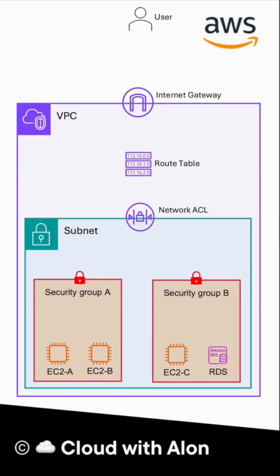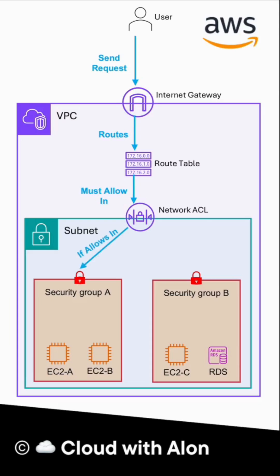Now let's see how NACL and security group work together in a real-world application. When a user sends a request, it first reaches the internet gateway, then goes through the route table to the NACL. The NACL must have a rule to allow it. If allowed, the request reaches the security group, which checks the request. If it is allowed, the request finally reaches the EC2 instance; if not, it is blocked.